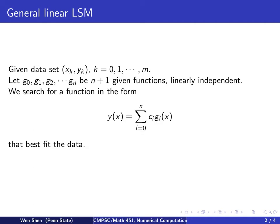We search for a function which is a linear combination of all these g's. Each g_i is multiplied by some coefficient c_i, and we add them all up.